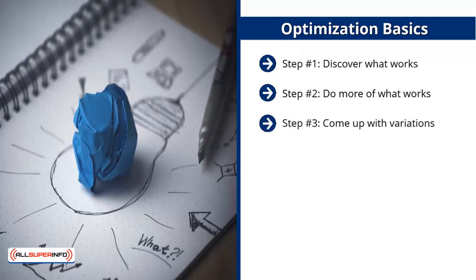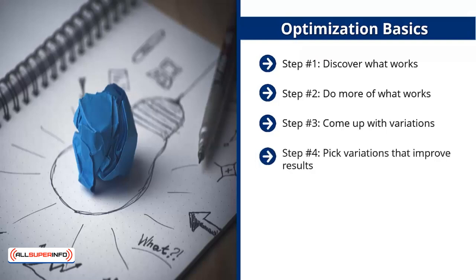Step number three: come up with variations. Come up with different content or different ways of getting traffic from your tried and proven sources. Mix it up — come up with variations of your traffic generation techniques and track the results with each variation. Step number four: pick variations that improve results. After giving yourself enough time, it should be clear which variations work. Assuming there are any, pick the top three variations and forget about the rest.